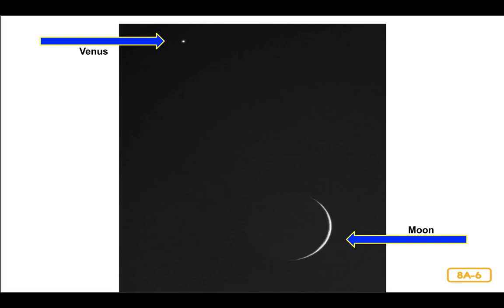Venus is sometimes referred to as the morning star or the evening star, because it often appears as a bright object in the evening sky or in the morning sky. Venus is also known as Earth's sister planet because it is the closest planet to Earth and the two planets are roughly the same size. Being a sister planet to Earth is another fact unique to Venus.